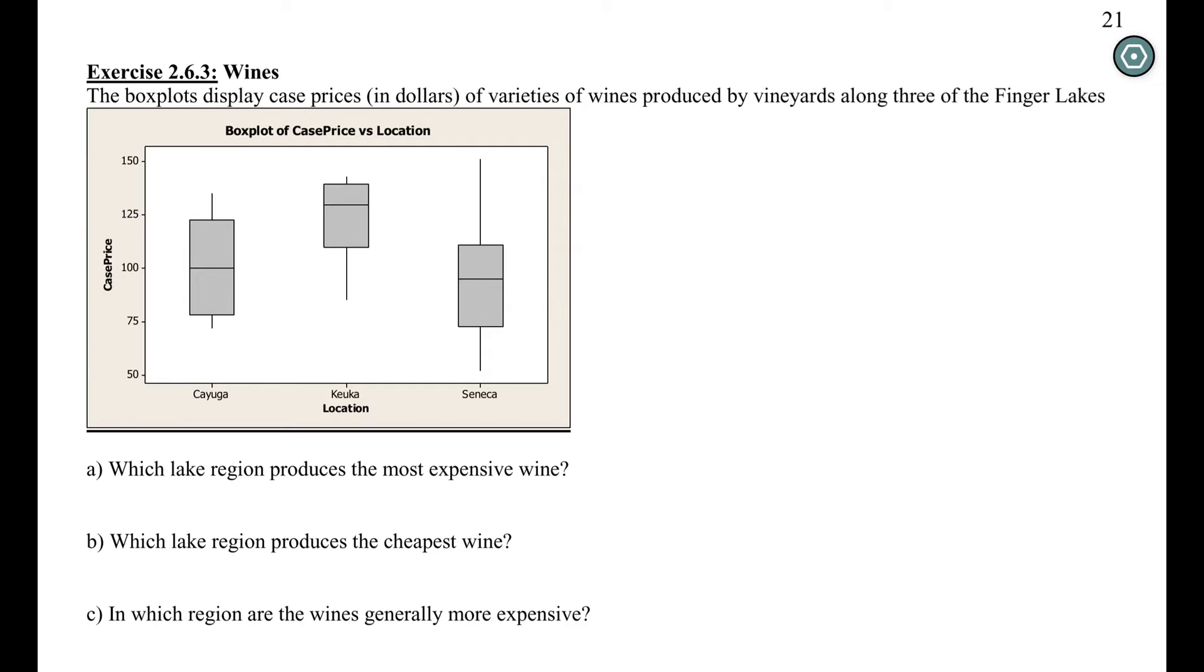We see here in this first exercise, we've been given three boxplots on the same axes showing us the case prices of wines from vineyards along three of the Finger Lakes. Just glance at these, and there's some questions I could ask about this. First one, which lake region produces the most expensive wine? Take a moment, think about which one you think produces the most expensive wine.